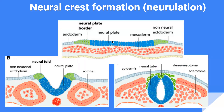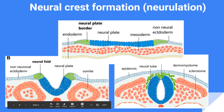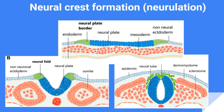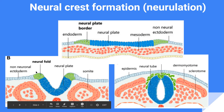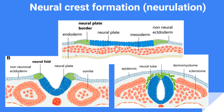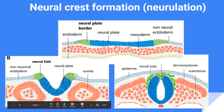Neurulation begins with the neural folds rising upward, which is followed by the neural plate invaginating inwards into the mesoderm. While this is taking place, the pre-migratory neural crest cells are found in the neural fold, until they eventually fuse. This fusion is the result of the conversion of the originally flat neural plate into a cylindrical structure known as the neural tube.